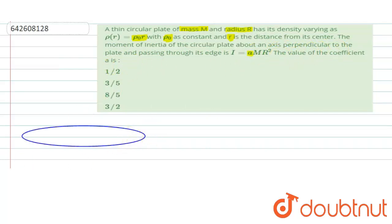Okay, so let's understand the concept. This is a thin circular plate of mass m and radius r and its density is varying as rho naught into r, where r is the distance from the center. Rho naught is constant. So we have to find its moment of inertia. As this is a disk, for finding the moment of inertia we can break it into elements and those elements will be rings.